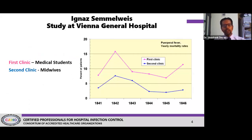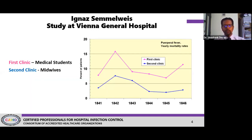This was the study that Ignaz Semmelweis did at Vienna General Hospital. The hospital ran two clinics for pregnant women about to deliver children. The first clinic, run on alternate days by medical students, had a much higher puerperal sepsis rate — marked by the pink line — compared to the second clinic run by midwives. He observed the practices of both teams and found they did the same things except that medical students went to the post-mortem unit to do autopsies and then came directly to deliver children without washing their hands.